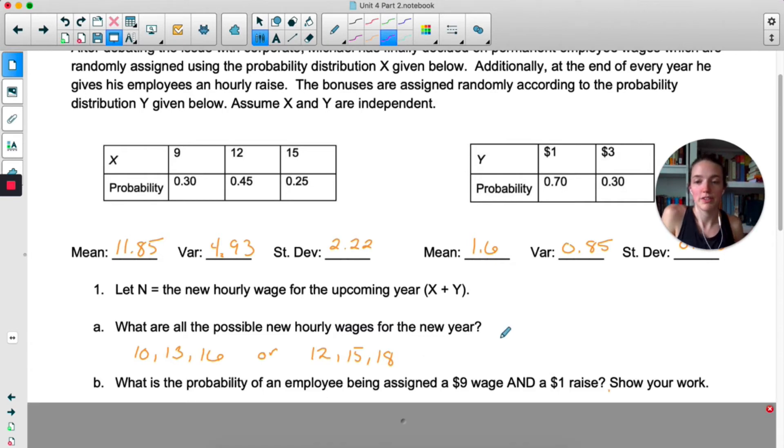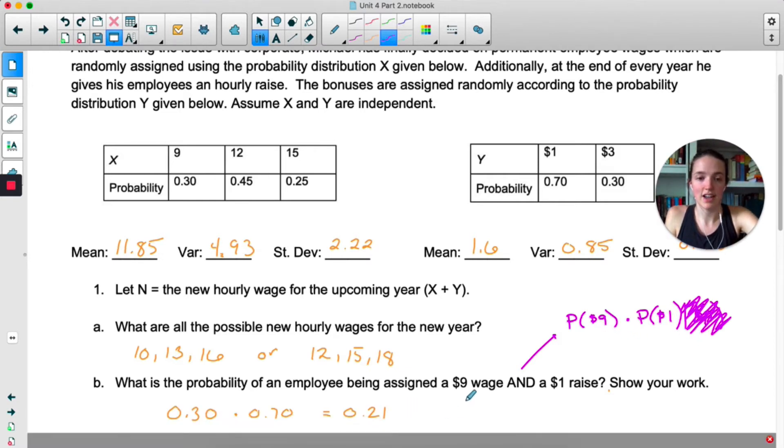Now let's focus on just one of these. What's the probability of an employee being assigned a nine dollar wage and a one dollar raise? This is an 'and' question. Now the general multiplication rule says that for an 'and' situation I should do the probability that they get nine dollars times the probability they get the one dollar raise given that they already make nine dollars. But here we are told that X and Y are independent, so we actually don't need this at all because the raise is completely independent of the wage they were making. It doesn't matter what wage they're making. Anyone could get the one dollar or three dollar raise. So I just have to multiply these together. That means there's a 21% chance that they get the nine dollar wage and the one dollar raise, which would make their new wage ten dollars.